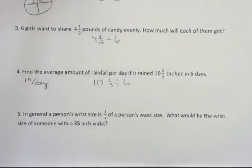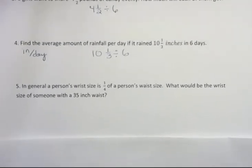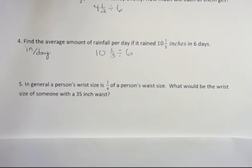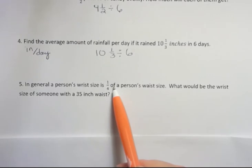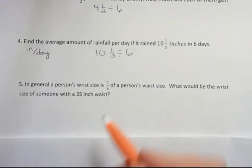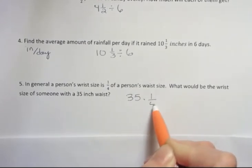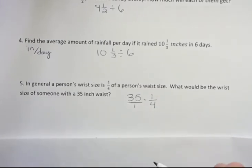In general, a person's wrist size is one fourth of a person's waist size. What would be the wrist size of someone with a 35 inch waist? That was hard to read for some reason. So I'm asking here, what is one fourth of that? That's a multiplication. So I'm back to multiplication. I'm going to say I have a 35 inch waist and I want to multiply that by one fourth. I'm going to put that 35 over one and I'm ready to multiply.